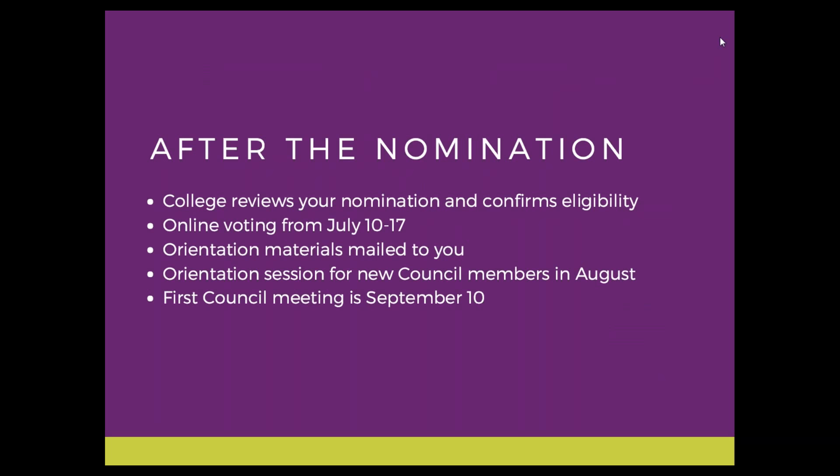Once the nomination period ends on May 25th, the college will review your nomination and confirm if you are eligible to run. Online voting runs from July 10th to July 17th — we keep it open for a week to make sure everyone has time. You will be emailed the ballot directly. Don't worry when you're elected — we work with you throughout the summer to make sure you receive an orientation package mailed to your home.